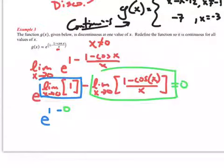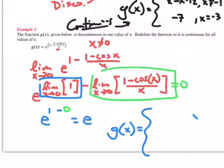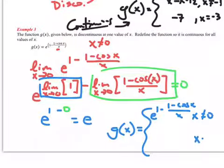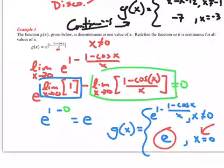So this limit of this function as x goes to 0 equals e. Therefore, now I can go ahead and generate a continuous function and say when x is not equal to 0, I have my function, e to the 1 minus 1 minus cosine of x over x. And when x does equal 0, I want my function to equal e. And now we have plugged the gap. We've plugged that hole right here with a value specifically assigned to when x equals 0. And now we have no discontinuities, and g of x is continuous.